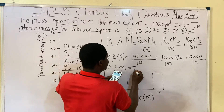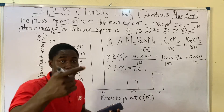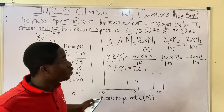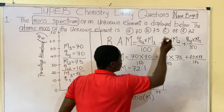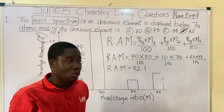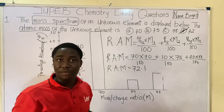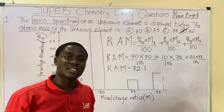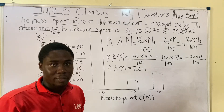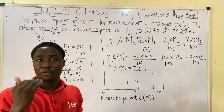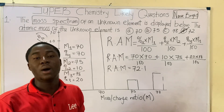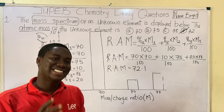The result is 72.1. Remember, relative atomic mass does not have units, so no unit is written. So the answer to the question is option D, which is 72 or 72.1 — that's the closest answer. I believe you understand how questions under this topic are solved — it's actually very easy. Make sure you click the subscribe button and share these lessons with your friends, as more video lessons like this will be out soon. Thanks for watching.